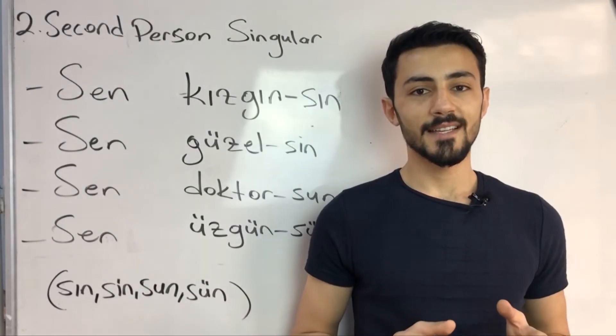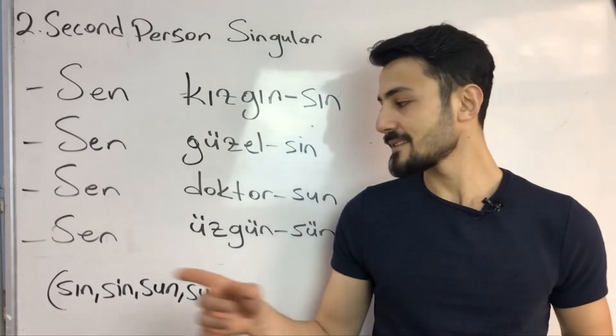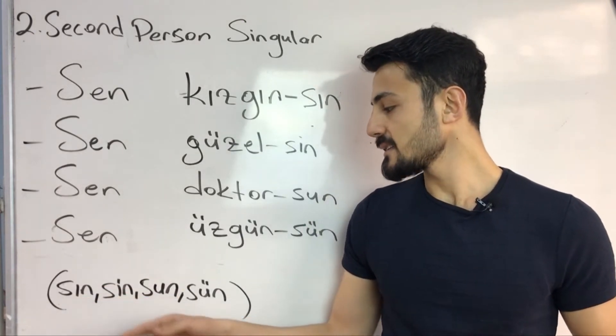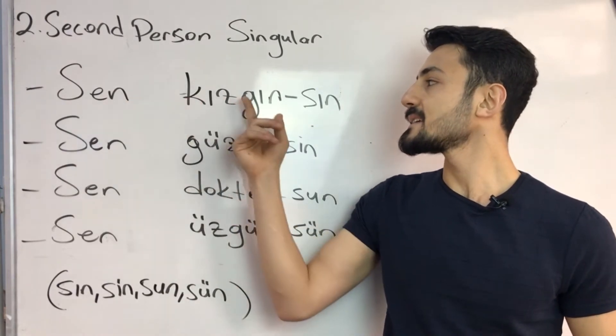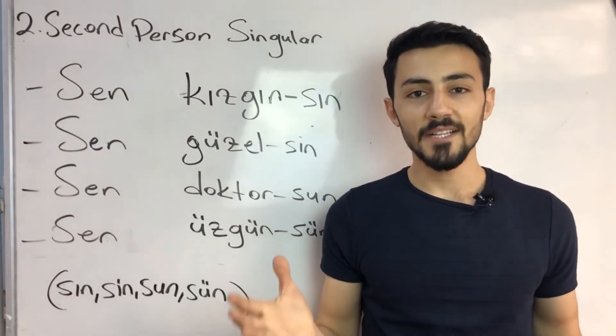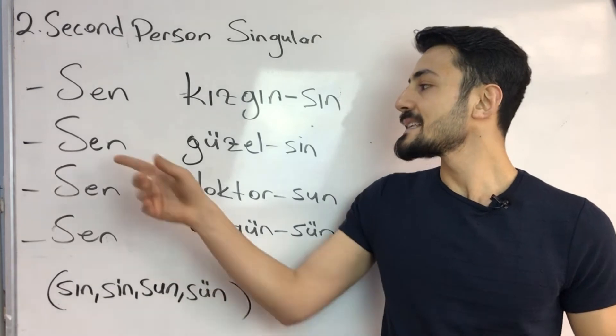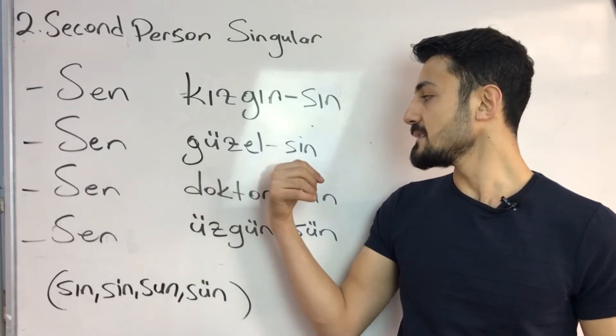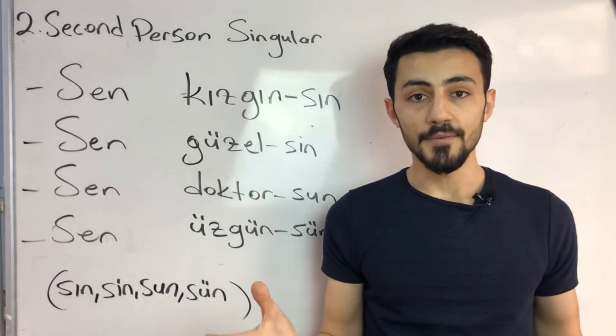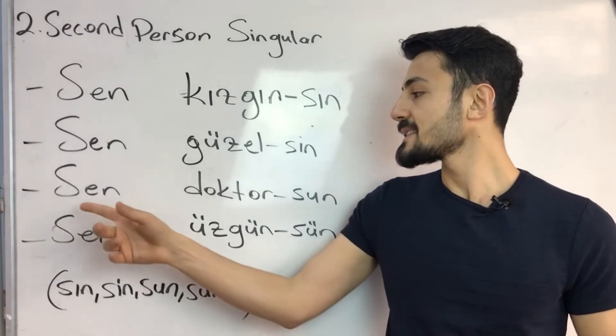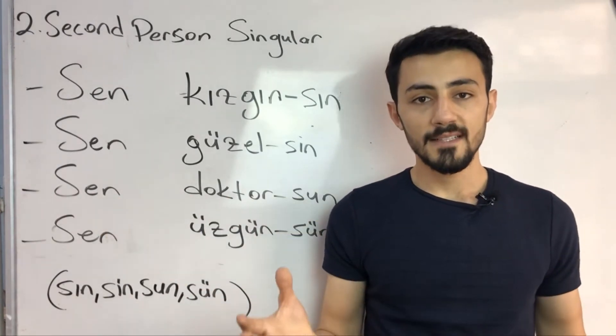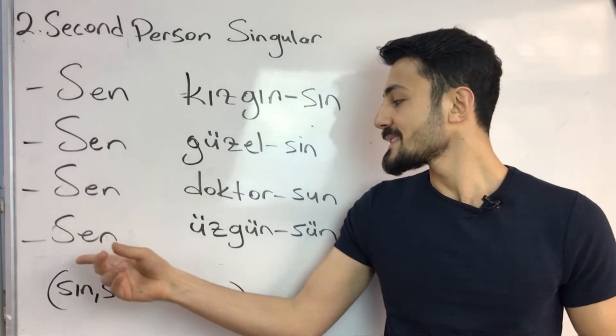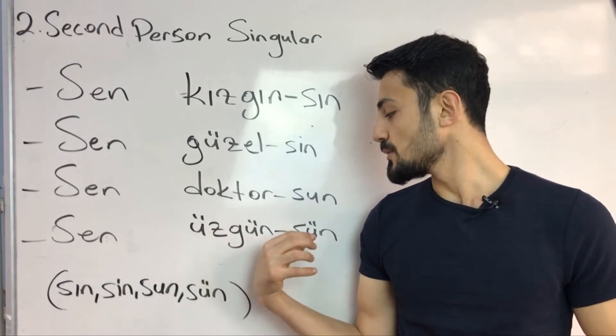In second person singular the suffix is sın, sin, sun, sün. Sen kızgınsın - You are angry. Sen güzelsin - You are beautiful. Sen doktorsun - You are a doctor. Sen üzgünsün - You are upset.